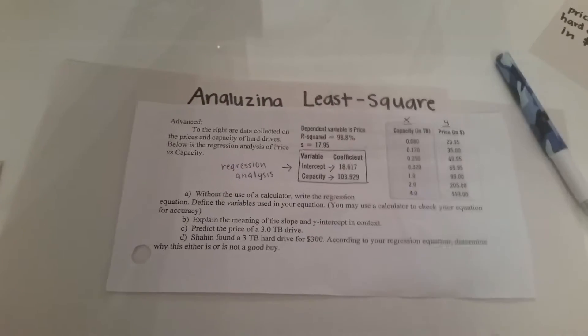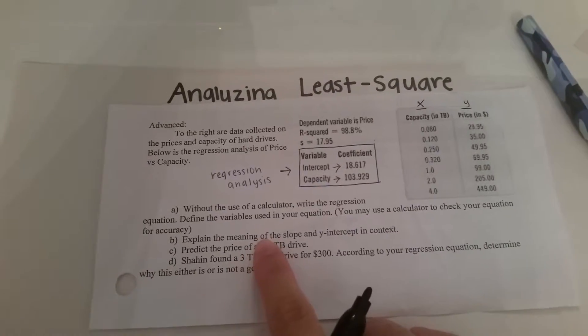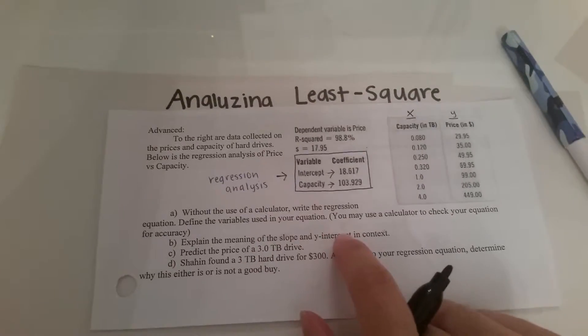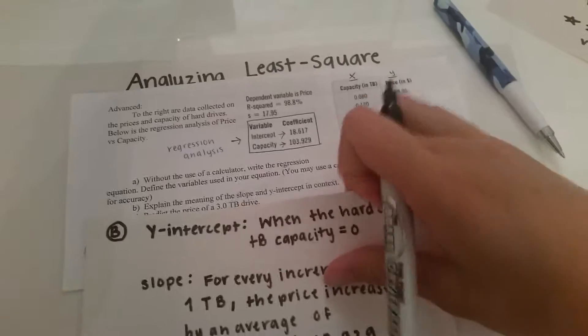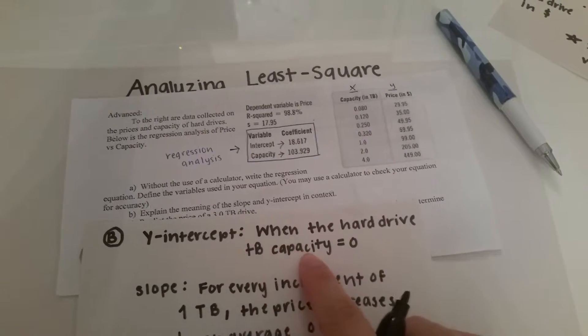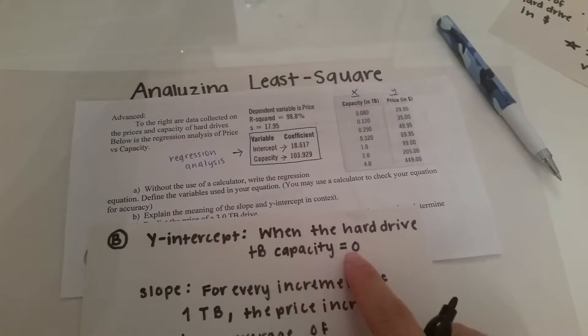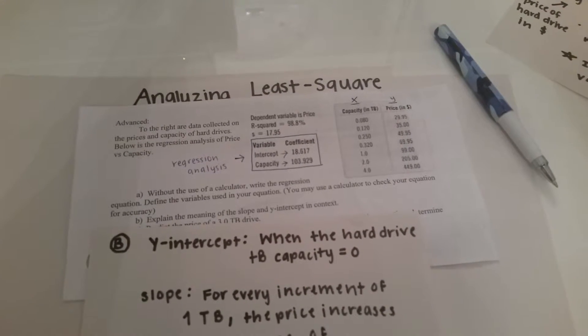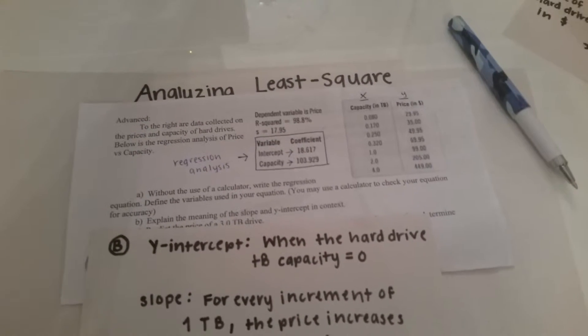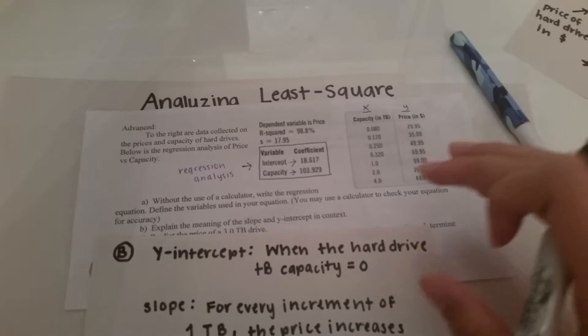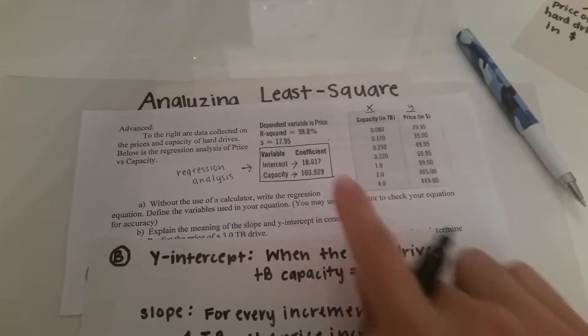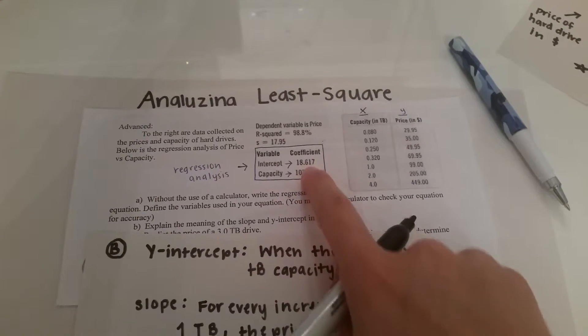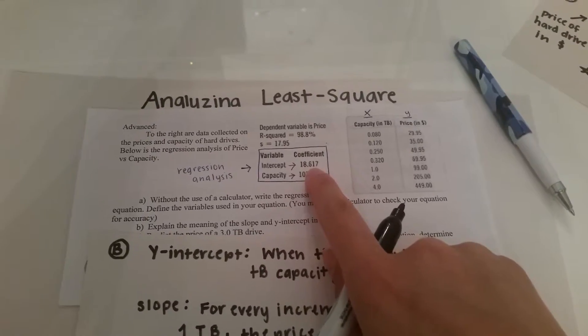Now going on to part b it asks explain the meaning of the slope and y intercept in context. So earlier I mentioned that the y intercept is when the hard drive TB capacity is equal to zero which means that if the hard drive has zero TB capacity then it starts out at 18.62 dollars.